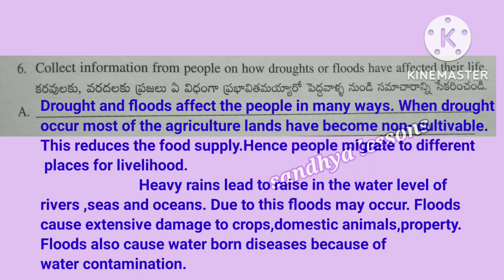Sixth question: Collect information from people on how droughts or floods have affected their life. Drought and floods affect people in many ways. When drought occurs, most of the agricultural lands become non-cultivable, reducing food supply, and people migrate to different places for livelihood. Heavy rains lead to a rise in the water level of rivers, seas, and oceans. Due to this, floods may occur. Floods cause extensive damage to crops, domestic animals, and property.